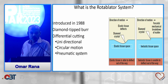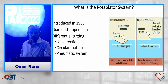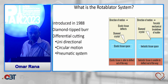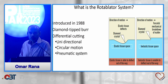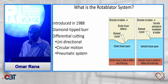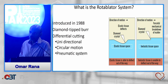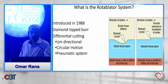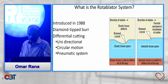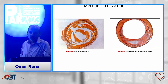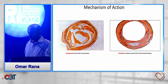So what is the rotoblator system? It was introduced 35 years ago. Most importantly, there's a diamond-tipped burr which comes in various sizes, and it works on the principle of differential cutting. When you have elastic tissue, that will give way. But when you have calcium, that tissue becomes inelastic — and that's when the diamond burr's diamond crystals will modify the plaque. That's a porcine model to illustrate what I've just explained.